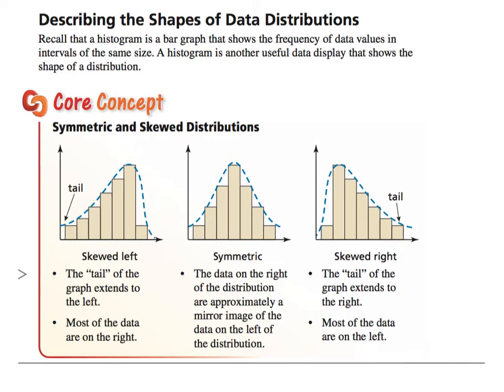Here, the data on the right of the distribution is approximately a mirror image of the data on the left of the distribution. Therefore this graph is symmetric. And here, most of the data is on the left, therefore this is skewed right.